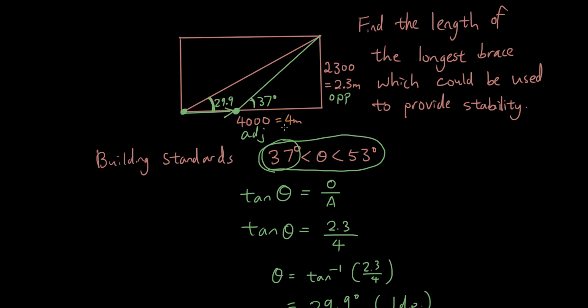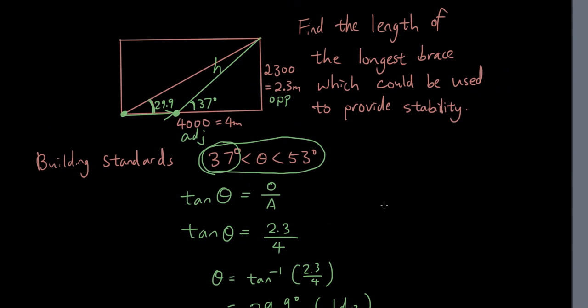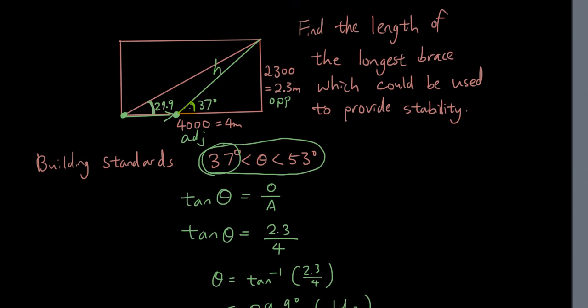And then once you've changed it to 37, you can then find the length of the brace, which we can say H. We want to find H. So how do we find H using the new triangle? We can ignore this part now because that doesn't fit in our standard. So using the new triangle, I should have drawn a right angle here because it's a right angle triangle.